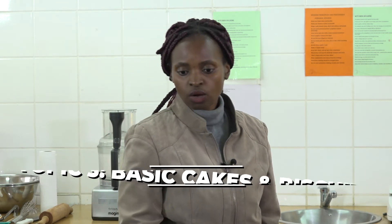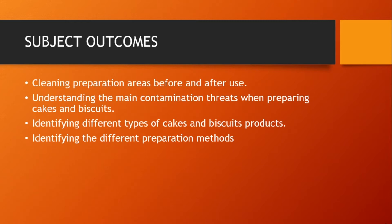Today's lesson comes from food preparation level three, topic three: basic cakes and biscuits. The four subject outcomes we will cover are: cleaning preparation areas before and after use; understanding main contamination threats when preparing cakes and biscuits; identifying different types of cakes and biscuit products; and identifying the different preparation methods.